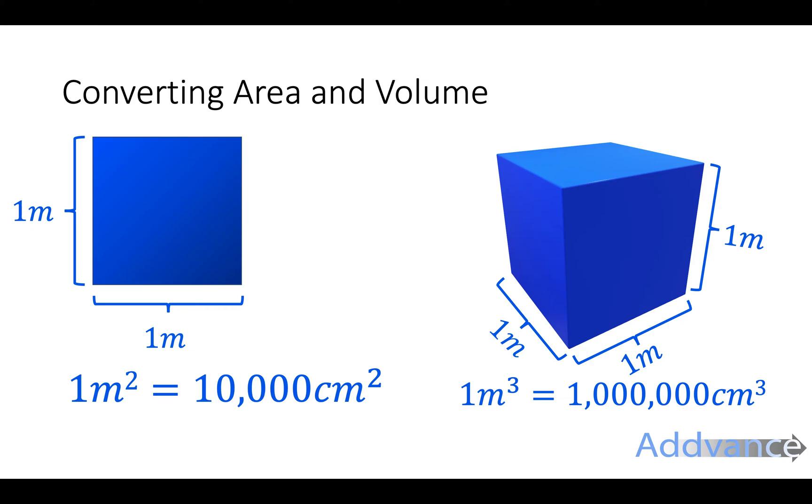And similarly for area and volume, to convert from meters cubed to centimeters cubed, or indeed millimeters cubed, you would convert the length first into centimeters or millimeters, and then multiply afterwards.